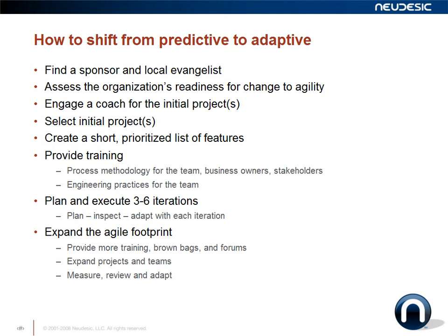Once you get through your initial three to six iterations and your teams are beginning to function as high-performing teams and you're beginning to see the benefits, you can start to expand the agile footprint. To do that, you'll want to provide more training — brown bags, forums, ask-the-experts sessions. You'll expand projects and teams, picking another set to expand to and setting them on a course for their initial three to six iterations. Measure, review, and adapt again, and continue expanding your agile footprint until you have as much of your organization covered as needed.